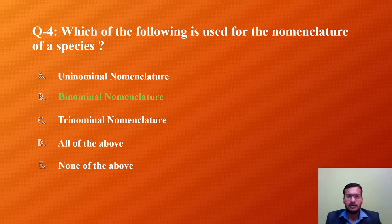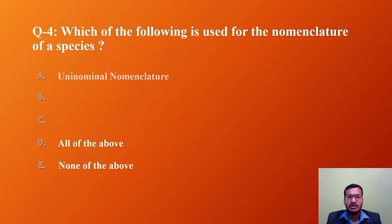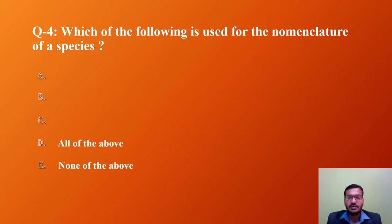Question 4: Which of the following is used for the nomenclature of a species? Options: A) Uninominal Nomenclature, B) Binominal Nomenclature, C) Trinominal Nomenclature, D) All of the Above, E) None of the Above. Uninominal nomenclature is used for taxa above the species rank, binominal nomenclature is used for the species level, and trinominal nomenclature is used for the subspecies level. The correct answer is B — Binominal Nomenclature.